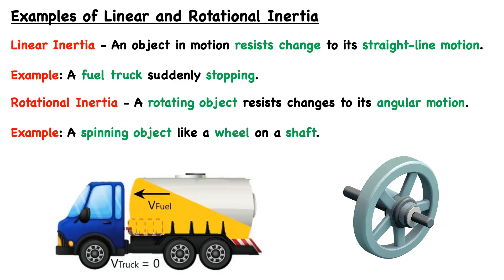Consider two cases with the wheel. First, if the wheel is not spinning and we want it to begin spinning by applying a force, it will resist that change due to inertia — more and more force must be applied to get it spinning faster. Second, if the wheel is already spinning and we remove the driving force, it won't immediately stop. It will keep rotating, wanting to continue in that same manner until acted upon by an outside force, which comes from friction between the wheel and shaft, air resistance, and so on.